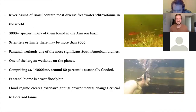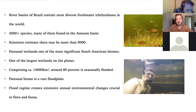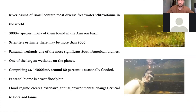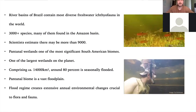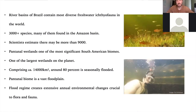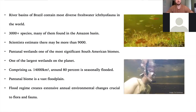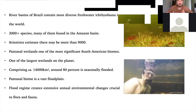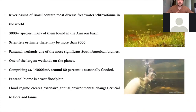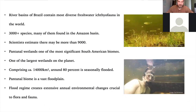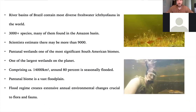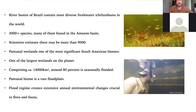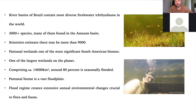As background, Brazil is incredibly rich in terms of ichthyofauna — around 3,000 freshwater species are known, but it's estimated there may be up to 9,000, with many yet to be discovered. The Pantanal wetlands in the interior of Brazil is a fantastic biome experiencing a flood pulse cycle. It covers around 140,000 square kilometers, the majority of which floods, and it's this flooding that supports such diversity and abundance of fish.